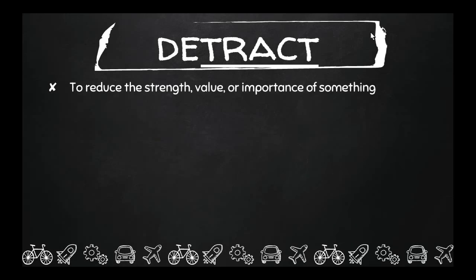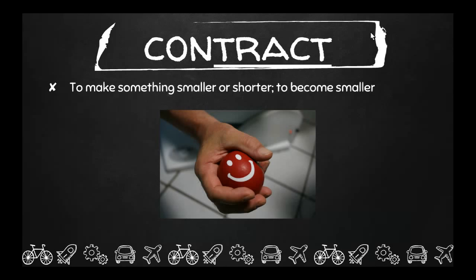Detract is to reduce the strength, value, or importance of something. If every single day I give you a lunchbox, then I am detracting — or taking away the value of it. You're not going to want it because it's not something special anymore. So to detract is to reduce the strength, value, or importance of something.